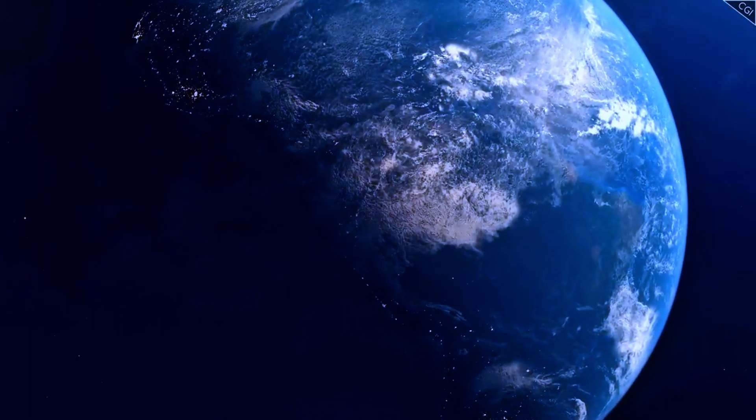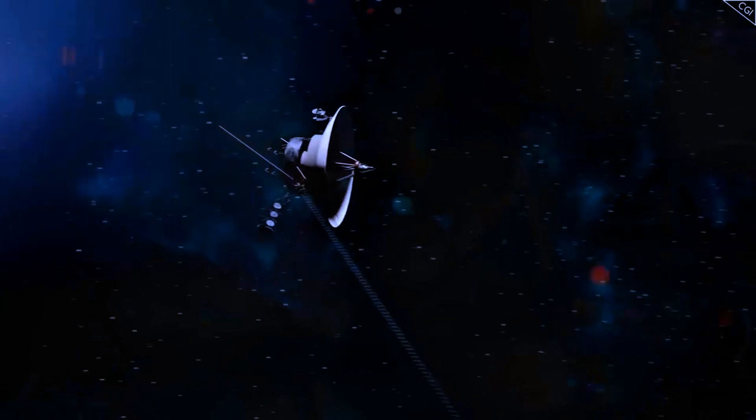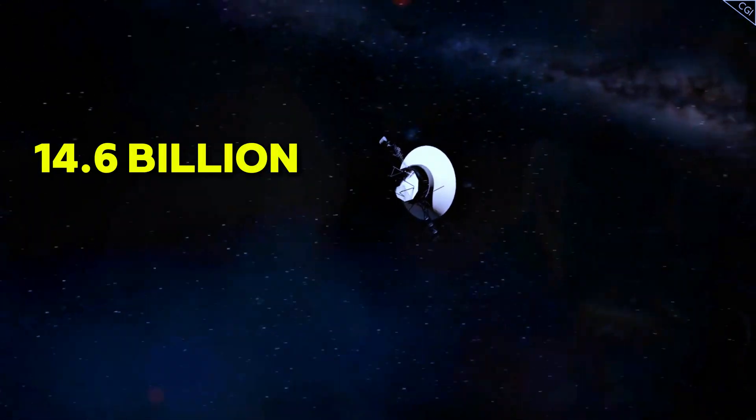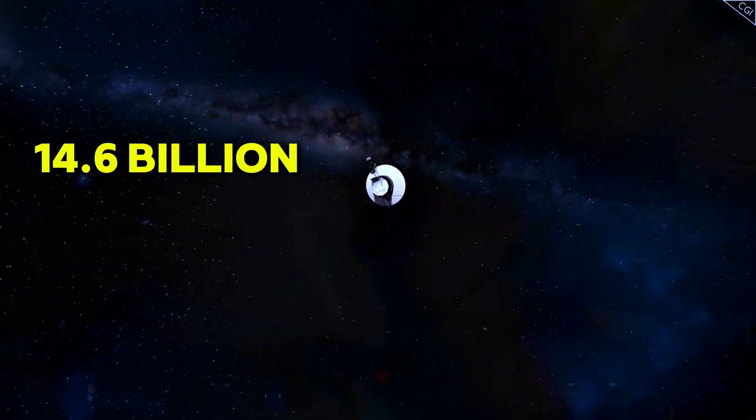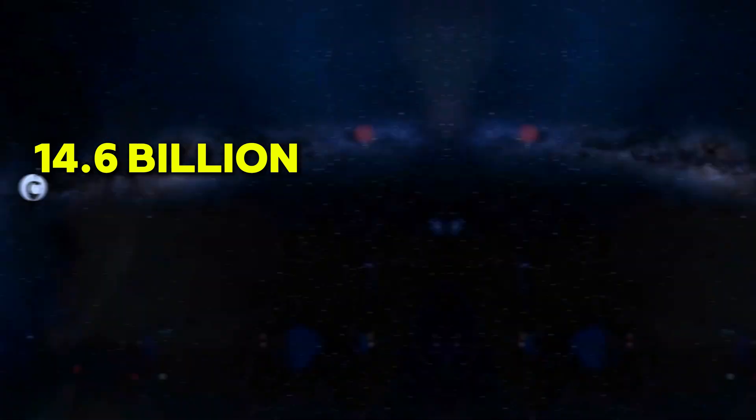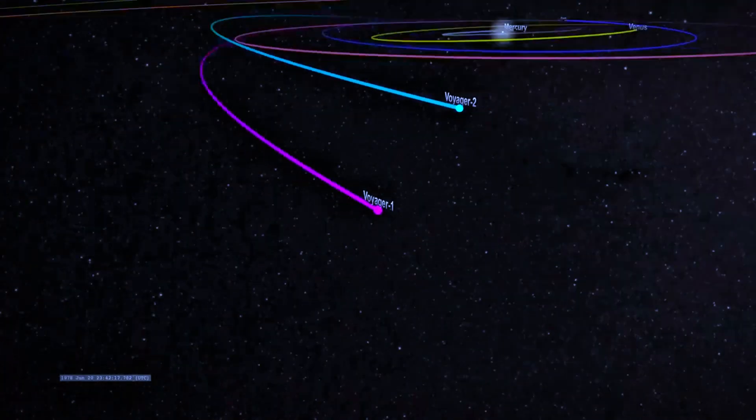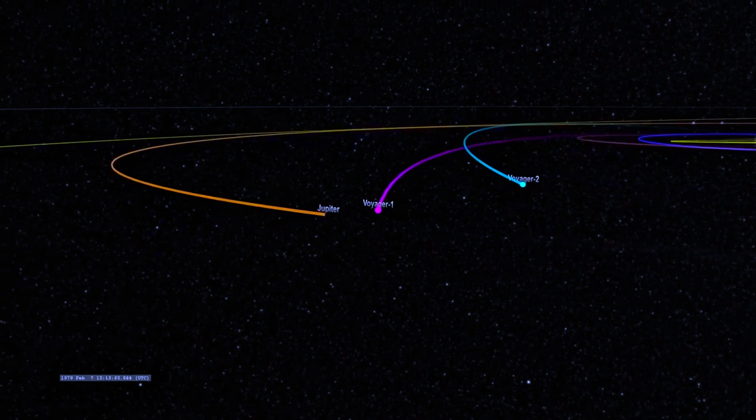Today, 47 years after its launch, Voyager 1 is over 14.6 billion miles from Earth. Despite the vast distance, it continues to send back valuable data, although with a delay of nearly 22 hours for signals to travel each way.